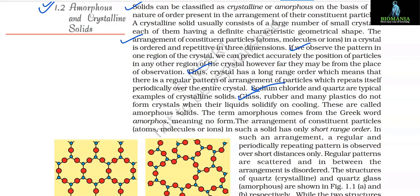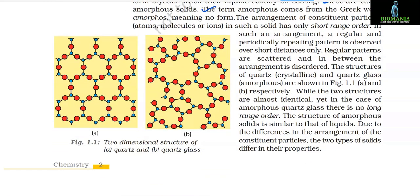Glass, rubber, and many plastics do not form crystals when their liquids solidify on cooling — these are called amorphous solids. The term 'amorphous' comes from the Greek word meaning 'no form.' The arrangement of constituent particles in amorphous solids has only short range order; a regular and periodically repeating pattern is observed over short distances only. The structure of quartz (crystalline) and quartz glass (amorphous) are compared in figure 1.1.